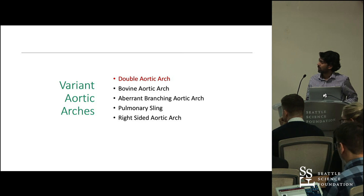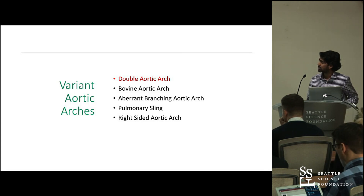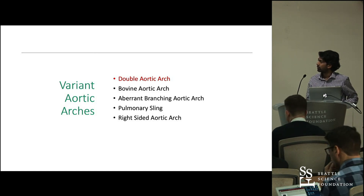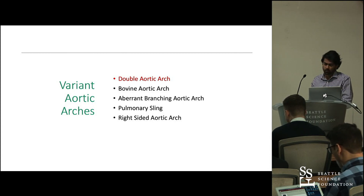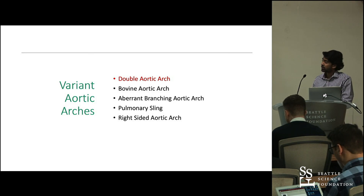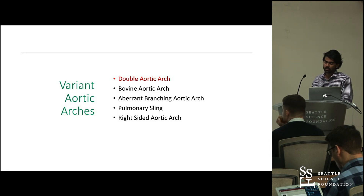Here are the different aortic arch variants we will discuss, specifically focusing on the double aortic arch. Another well-known variant is the bovine aortic arch, then aberrant branching aortic arch, a pulmonary sling, and a right-sided aortic arch. The double aortic arch is also known as a vascular sling or ring due to its compressive nature from the posterior and anterior arches, which cause the tracheoesophageal structures to be compressed.